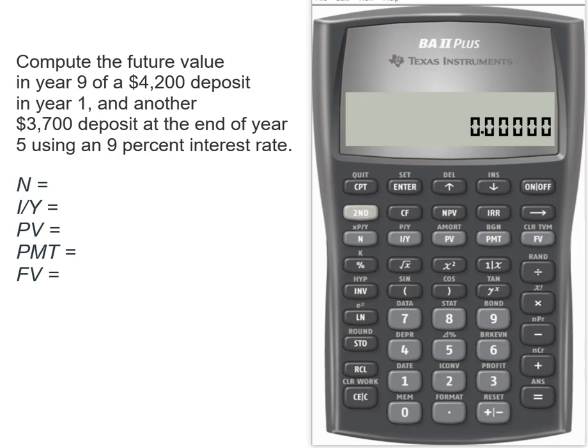The nine percent will apply to both of the deposits, but what will be different here is what your value for N is. So I'm going to find the future value of the $4,200 and then the future value of the $3,700 and I'm going to add those together. So I'm going to start with my future value of the $4,200.